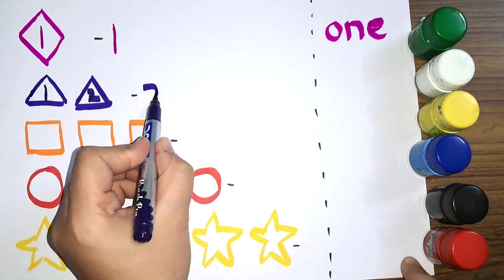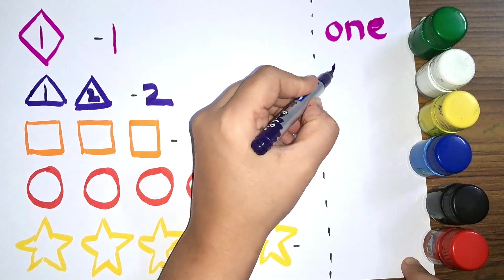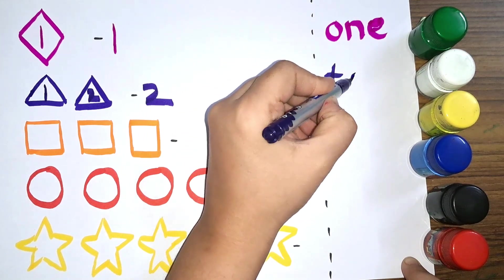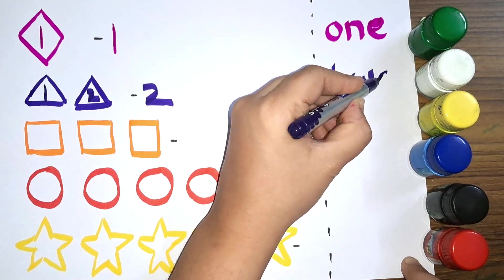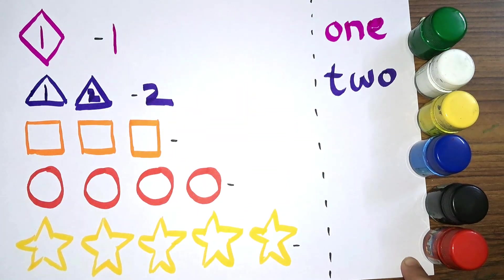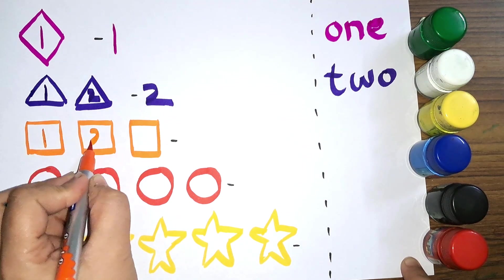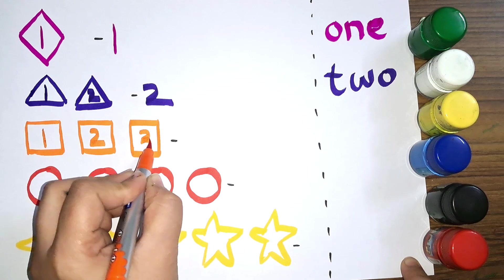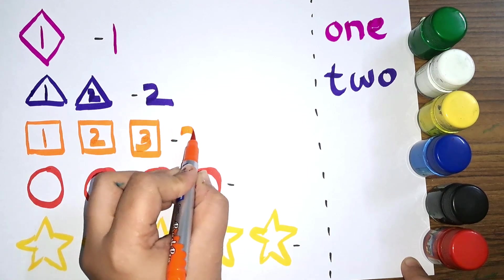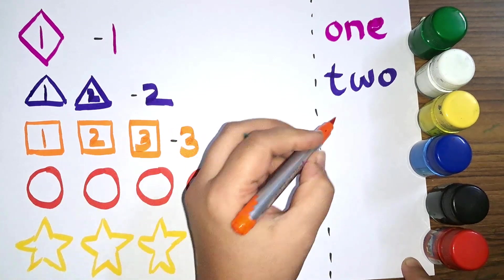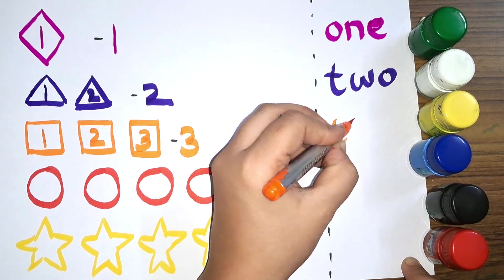Two triangles, T-W-O, two. Next we have the shape square. One, two, three squares. Three squares, T-H-R-E-E, three.